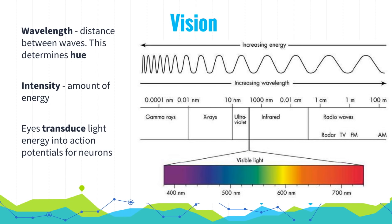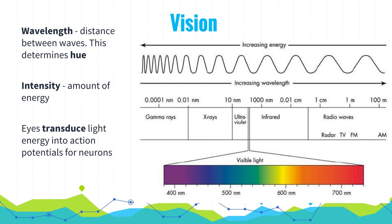Let's look at the sensory processing system of vision — how we see. Our brain primarily relies on our eyes to receive information about the world. We receive light wavelengths bouncing off objects; wavelength is the distance between waves, and this varying distance is what we call a hue — a color like red, orange, green, blue, or purple. As the wavelength gets bigger, the color gets closer to red; as it gets smaller, it gets closer to violet. Intensity is the amount of energy — different from wavelength. Eyes transduce light energy into action potentials for neurons, taking wavelength and intensity and converting it into information the brain can understand.